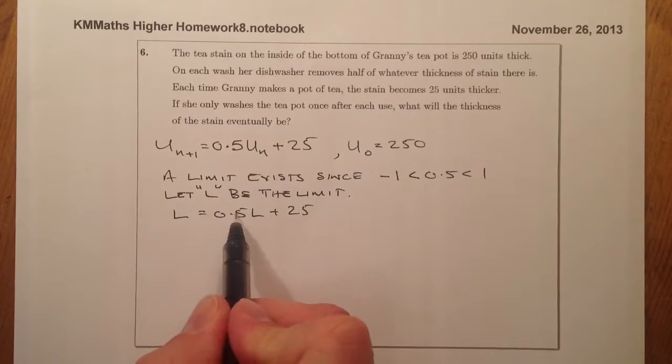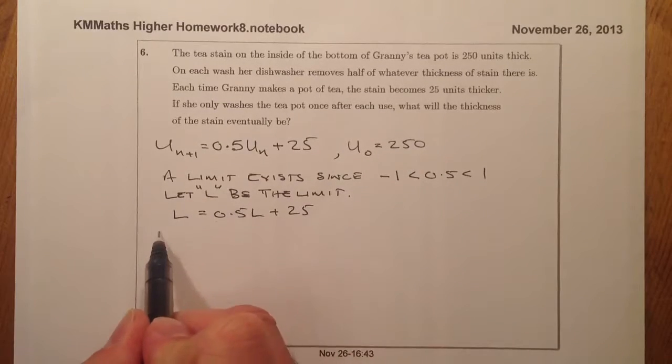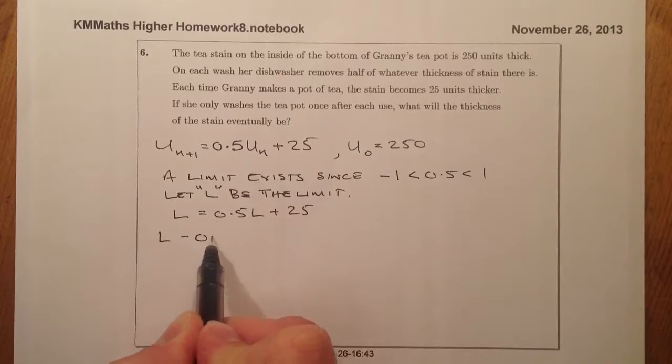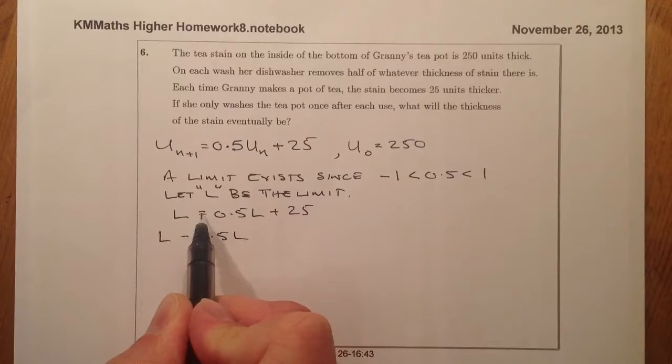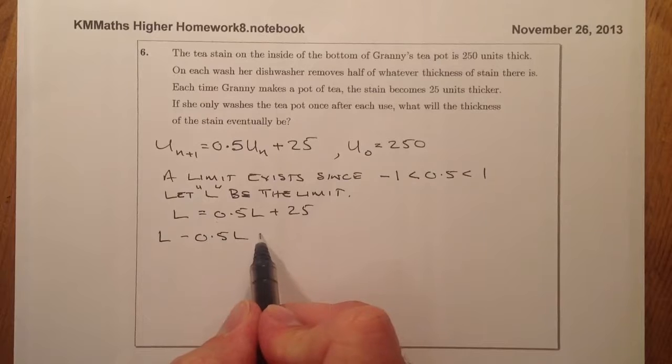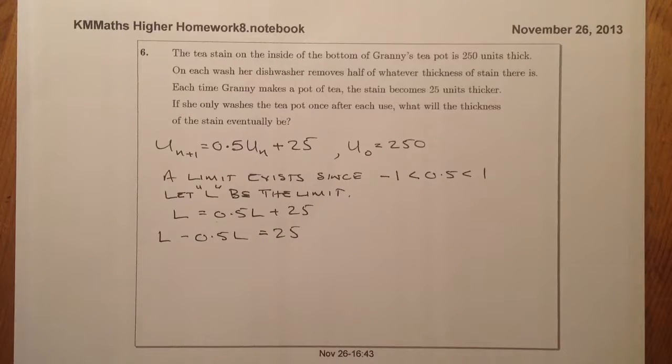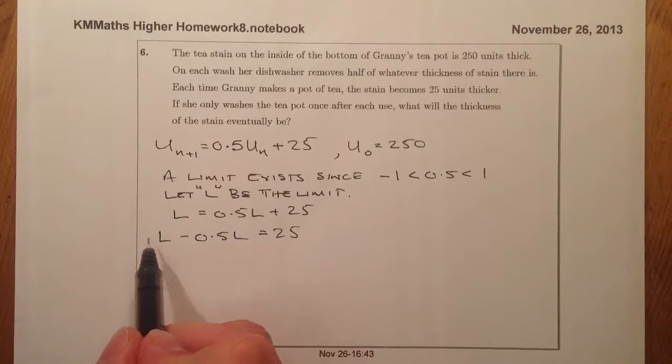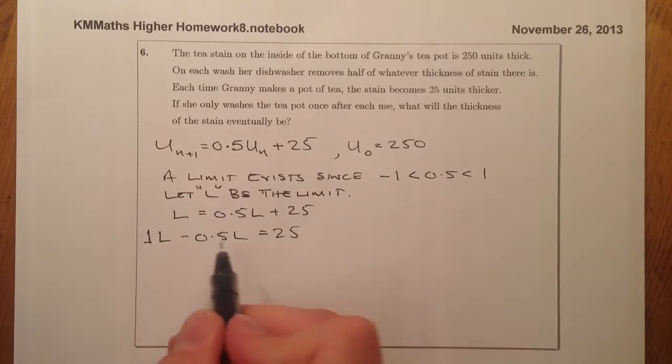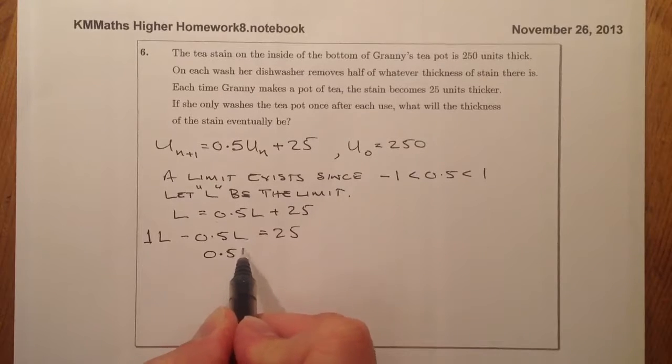Right, what I'll do is I'm going to take this part here over to the other side. So I've got L minus 0.5L over the other side of the equals sign. And that's equals 25. That's 25 left on the right hand side. Remember that's 1L. 1L take away half L leaves me with half L here.